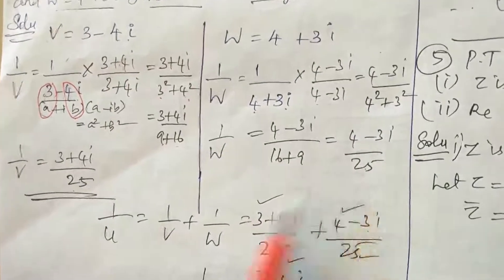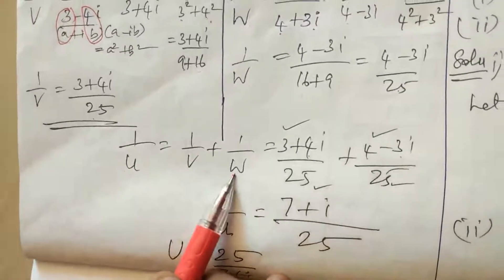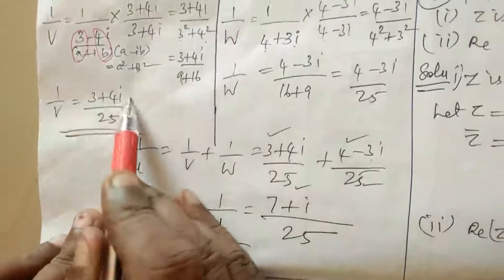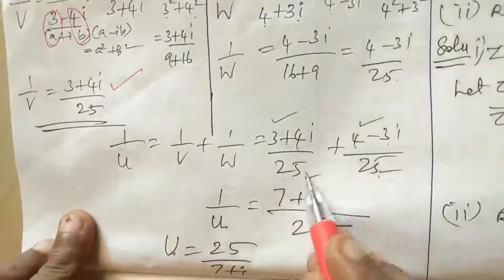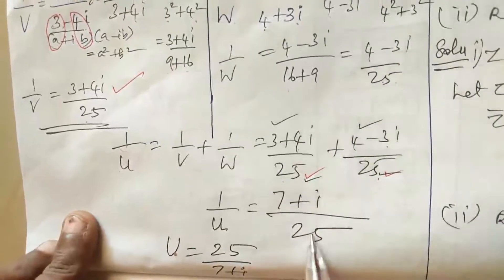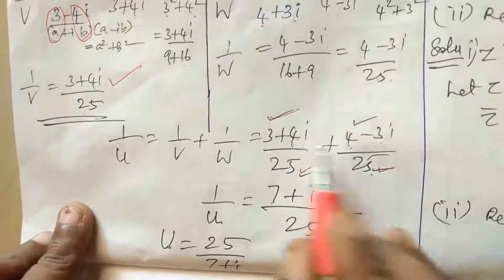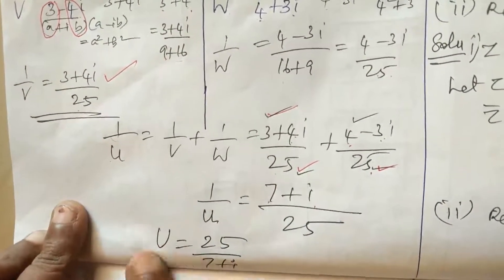Now 1/U equals 1/V plus 1/W. So 1/V equals (3 plus 4i)/25 and 1/W equals (4 minus 3i)/25. Adding them: 3 plus 4 is 7, and 4i minus 3i is i. So 1/U equals (7 plus i) divided by 25.